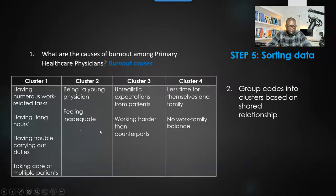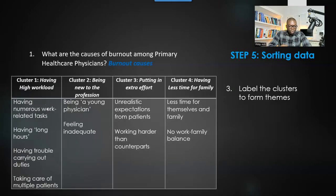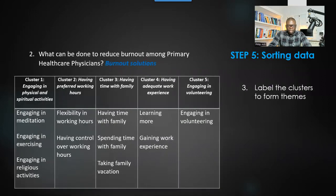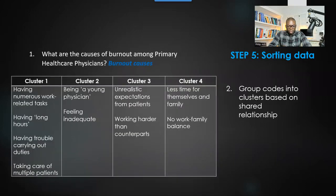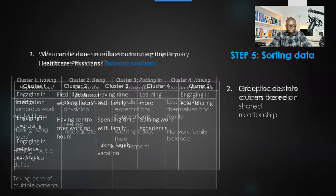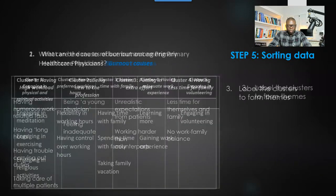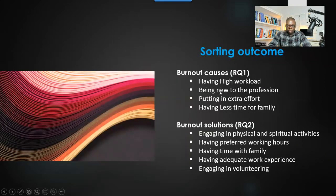Once you finish placing codes into clusters, look at the content of each cluster and come up with a label that represents everything in it. For example, 'having high workload' represents all the codes in cluster one, 'being new to the profession' represents cluster two, 'putting in extra effort' cluster three, and 'having less time for family' cluster four. You do the same for cluster two and label all clusters — those labels become themes addressing your research question. Here we have four themes for research question one and five for research question two.